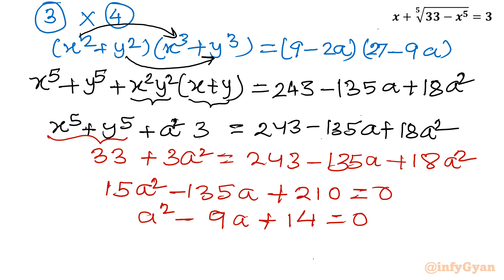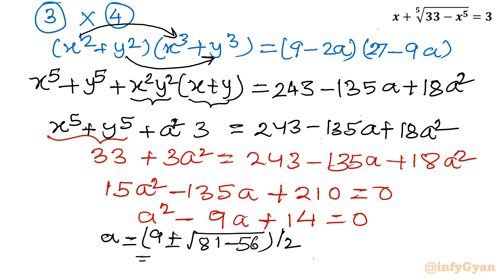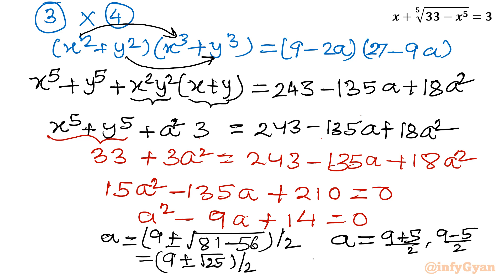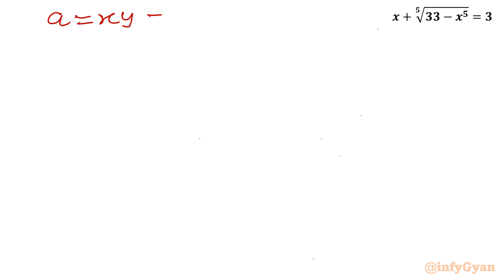Applying the Sridharacharya (quadratic) formula: a equals (9 plus or minus square root of 81 minus 56) over 2, which is (9 plus or minus square root of 25) over 2. So a equals (9 plus 5)/2 equals 7, or a equals (9 minus 5)/2 equals 2. We have two values of a: xy equals 2 and xy equals 7.